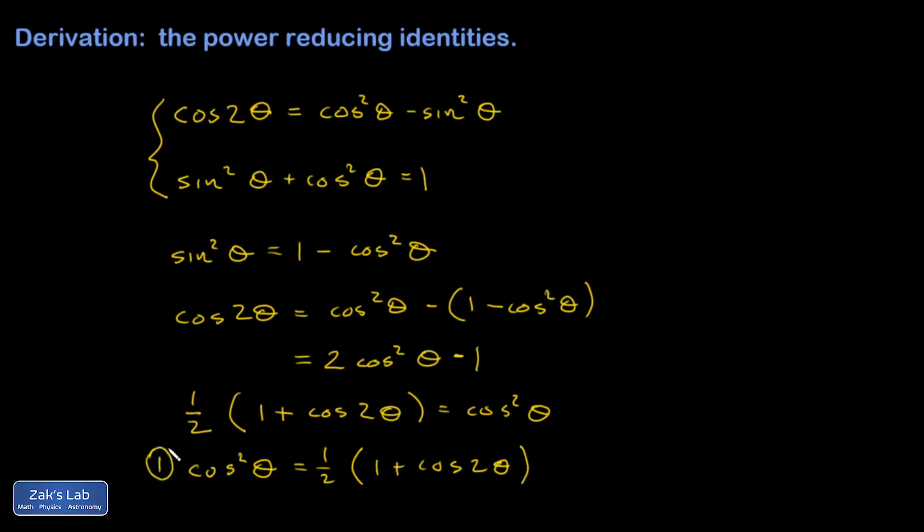This is an extraordinarily useful identity for calculus because an integral of the square of a cosine function, we don't know what to do with it. But if we use this identity, it's just the integral of an easy piece here and an easy piece here that requires thinking about the chain rule backwards a little bit. It makes these sorts of integrals doable if you remember these identities.